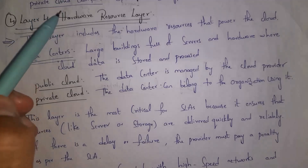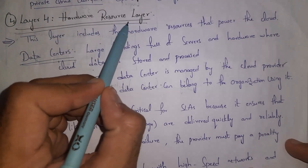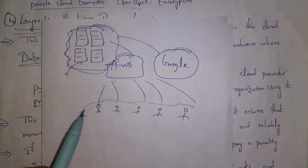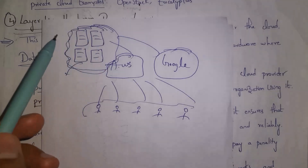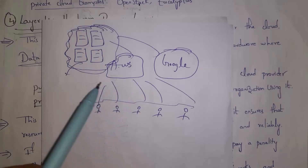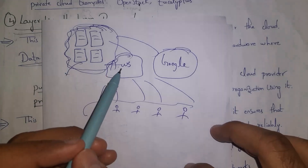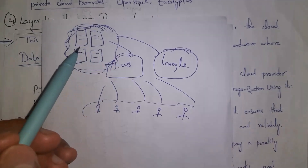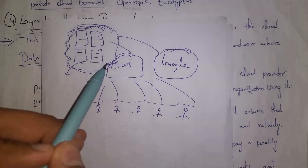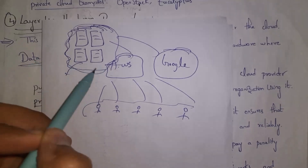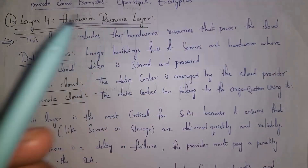The fourth layer is the hardware resource layer. This layer includes the hardware resources that power the cloud. Many users use AWS and Google Cloud, and these companies contain many servers stored in data centers. A data center is the physical location where servers are stored. Whenever a user uploads data to the cloud, that data is stored in data centers — large buildings full of servers and hardware where cloud data is stored and processed.